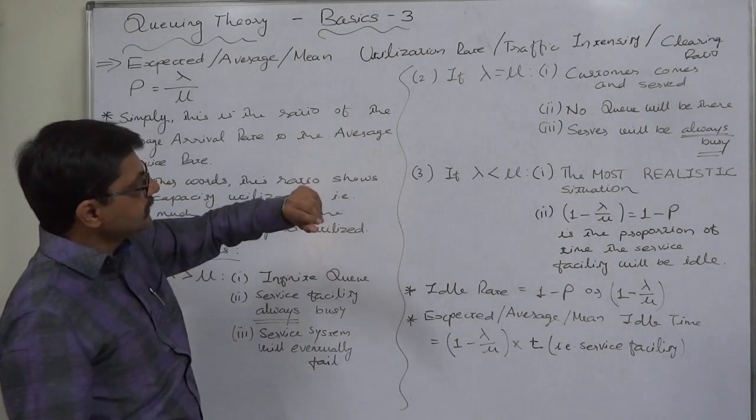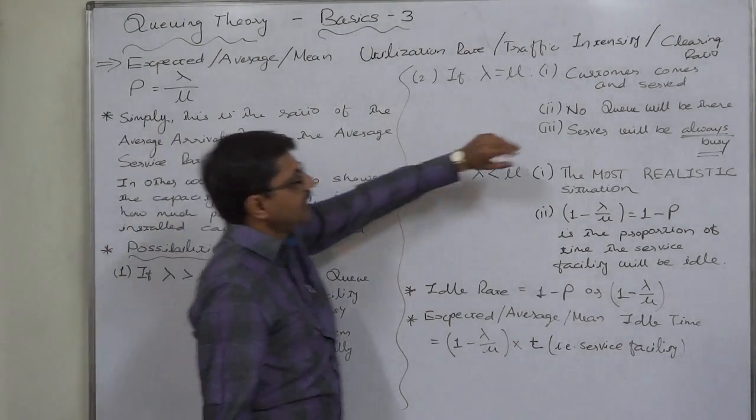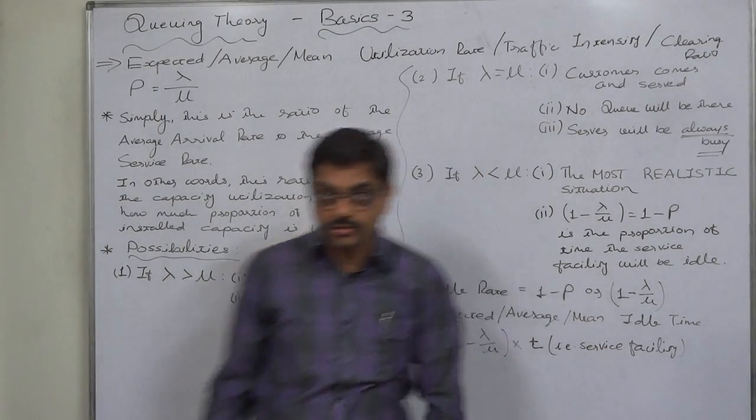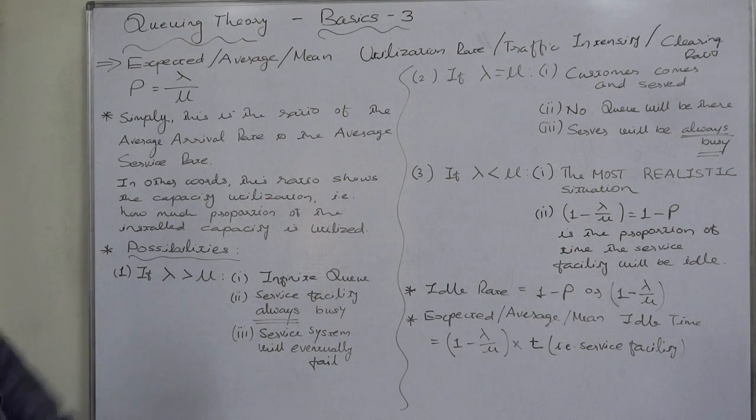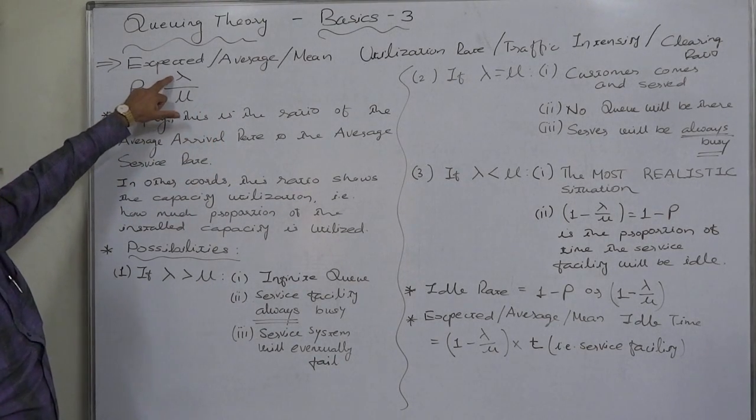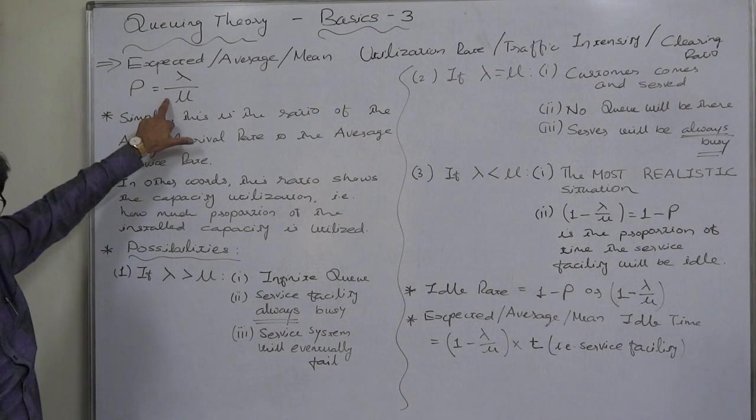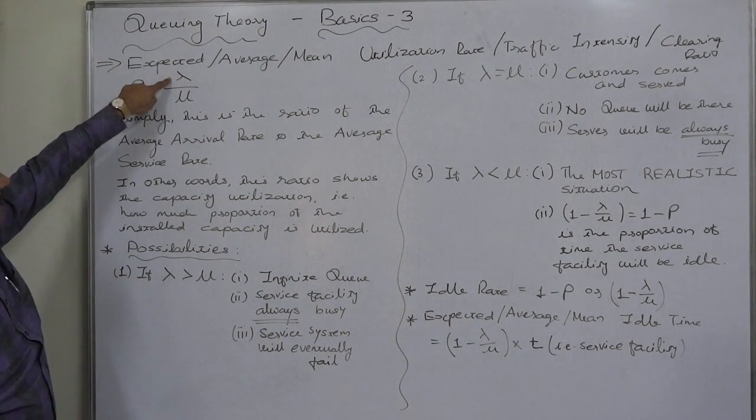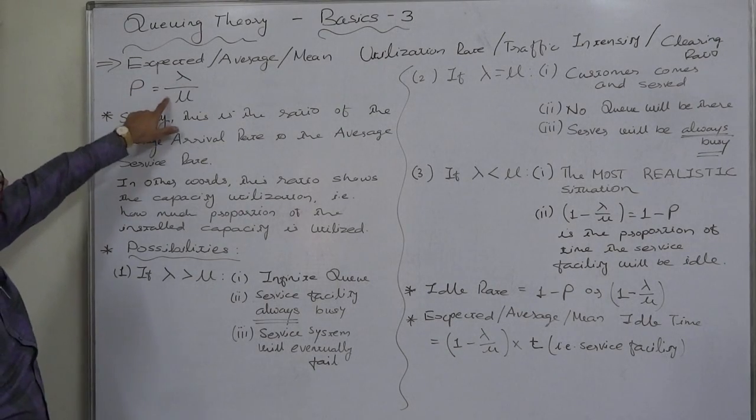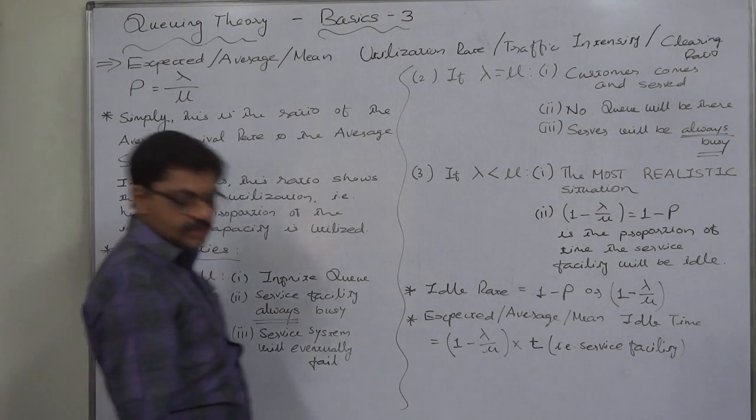Now utilization rate is also known as traffic intensity or clearing ratio. What exactly is the utilization ratio? It is lambda divided by mu. Simply it is the ratio of lambda, the average arrival rate, to mu, the average service rate.